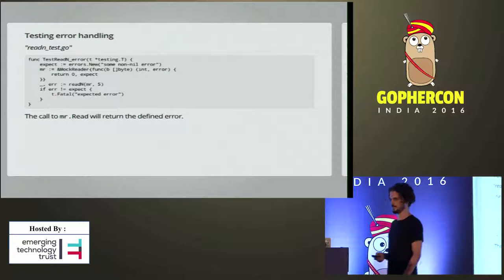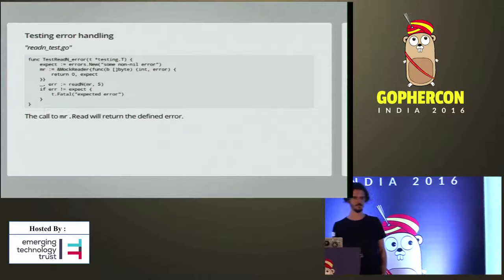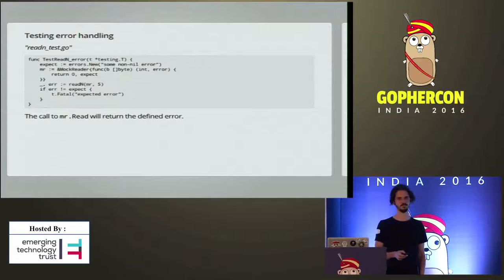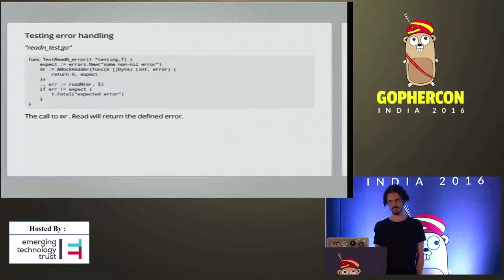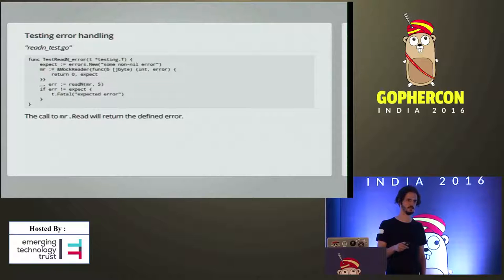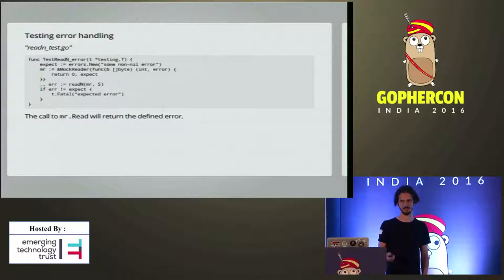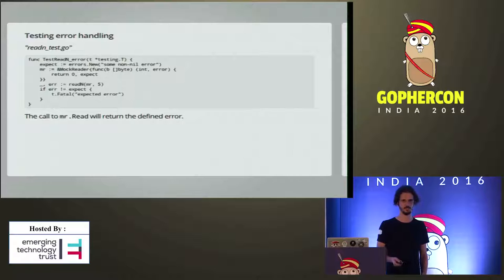The next one is testing error handling. We create a new error that is returned whenever read is called on our mock reader. We call readN again with the mock reader and a value of 5, and we expect that when readN calls read on the reader, the expected error is returned. This is a very dynamic way. I've looked into mocking and I find this approach to be the most helpful and easier to configure.